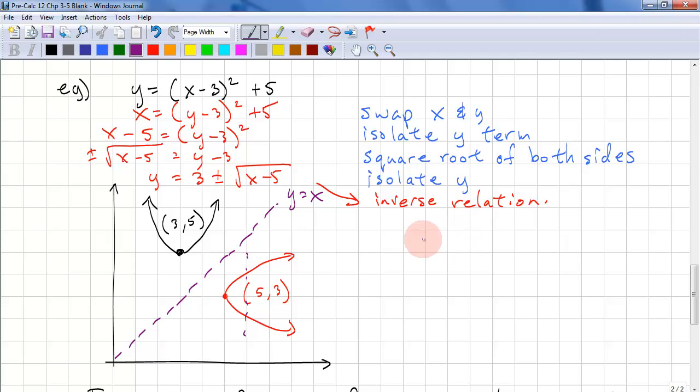We can determine whether our inverse is going to be a relation or a function by checking the original function. Since we are mirroring this vertical line, it becomes a horizontal line for the original function. So if we mirror this vertical line, we get this. And you can see that this line is a horizontal line. So we call this a horizontal line test for the original function.